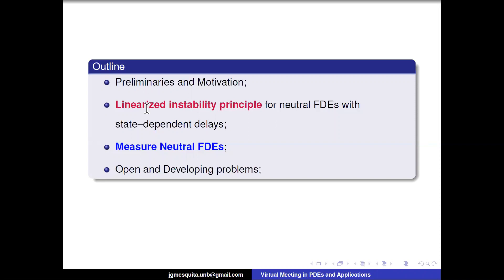About motivation: these types of equations are very important for modeling many phenomena. For instance, if you have some phenomenon where there is a time gap between cause and effect, you can model that better using functional differential equations. For example, with the coronavirus situation — in epidemiology, these types of equations are very important because when a person has coronavirus, the symptoms do not appear instantaneously. There is a certain time between a person becoming infected and symptoms appearing. You can also use these equations for population models, cancer models, and many others, because of this time gap between cause and effect.